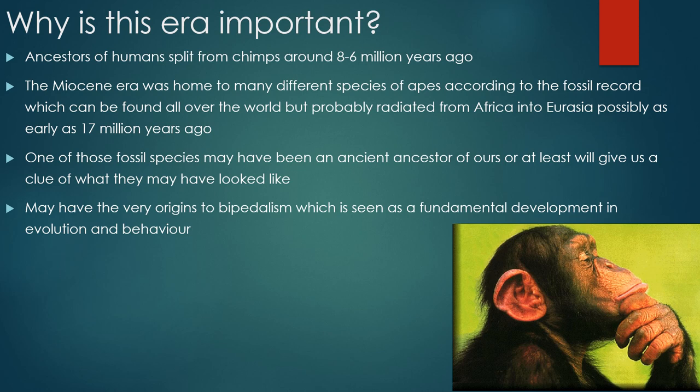So why is the Miocene important to paleoanthropologists, archaeologists, and human evolution in general? Ancestors of humans split from chimps around eight to six million years ago, which falls around the late Miocene era. The Miocene in general was home to many different species of apes — the fossil record is saturated with them all through Africa, Europe, and Asia. They probably originated in Africa and radiated into Eurasia about 17 million years ago.